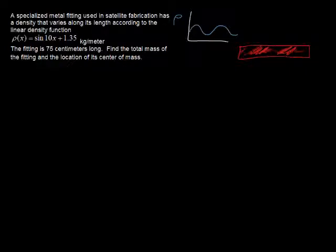Now, let's answer the first question. What is the total mass? Let's circle that in green. Well, the mass of an object equals the integral along its length, so from 0 to 0.75, of its density function, so of sine of 10x plus 1.35.